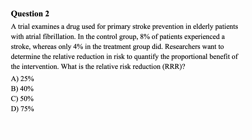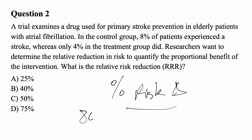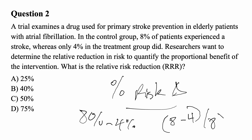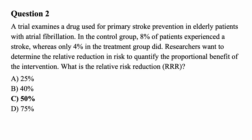Question two: A trial examines a drug for primary stroke prevention in elderly patients with AFib. In the control group, 8% experienced a stroke versus only 4% in the treatment group. What is the relative risk reduction? Relative risk reduction compares the proportional change: (8% minus 4%) divided by 8%, times 100, equals 50%. The answer is C.